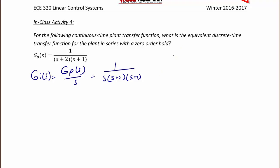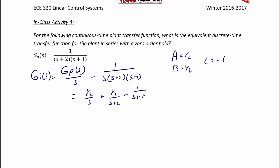So by using the cover-up method, we can find that a equals 1/2, b equals 1/2, and c equals negative 1. So we can write this as (1/2)/s plus (1/2)/(s + 2) minus 1/(s + 1). So g_i(t) is equal to (1/2 + (1/2)e^(-2t) - e^(-t)) u(t).